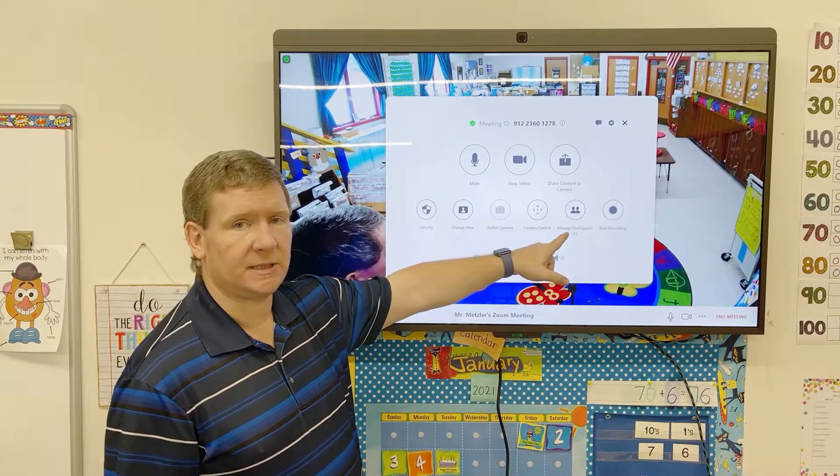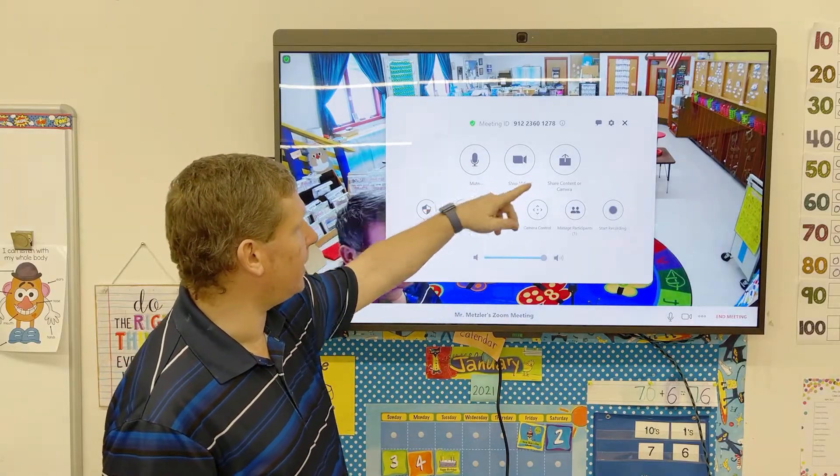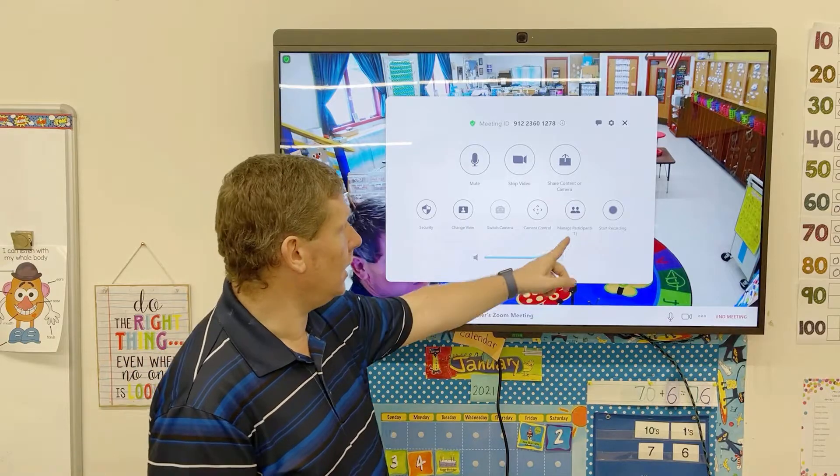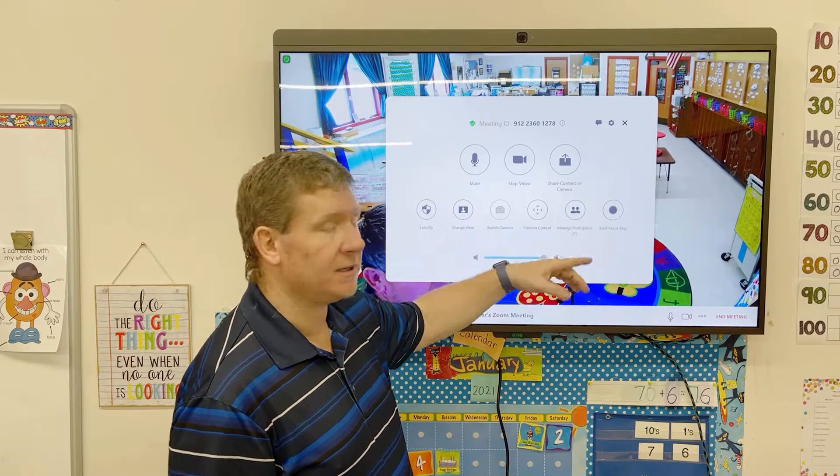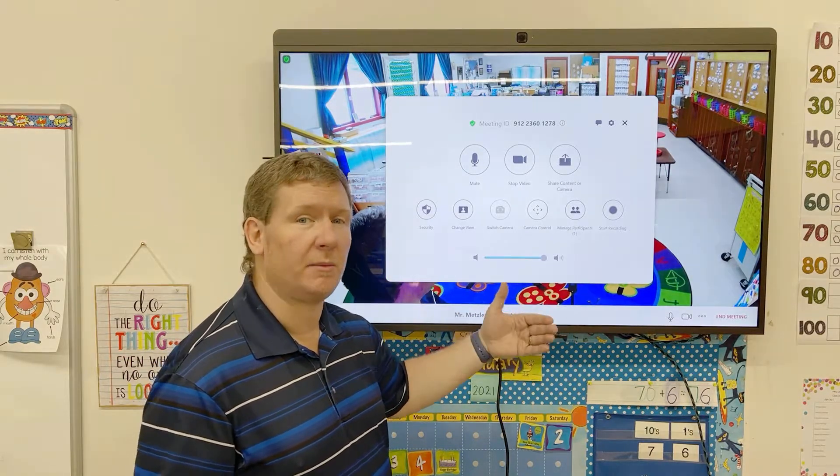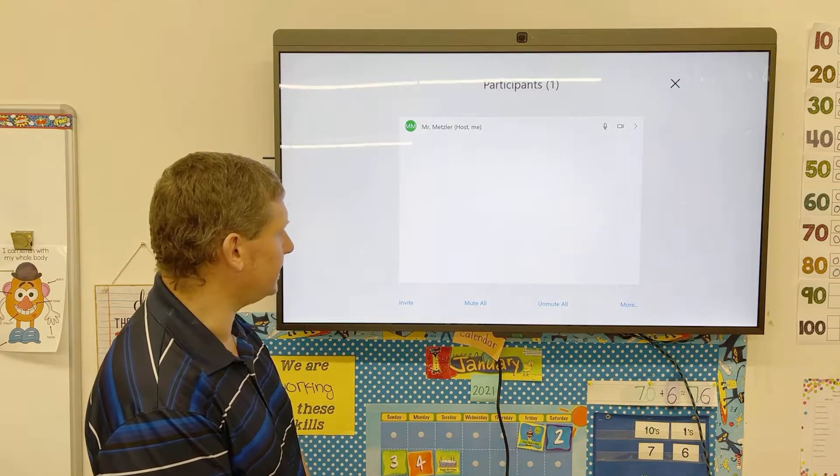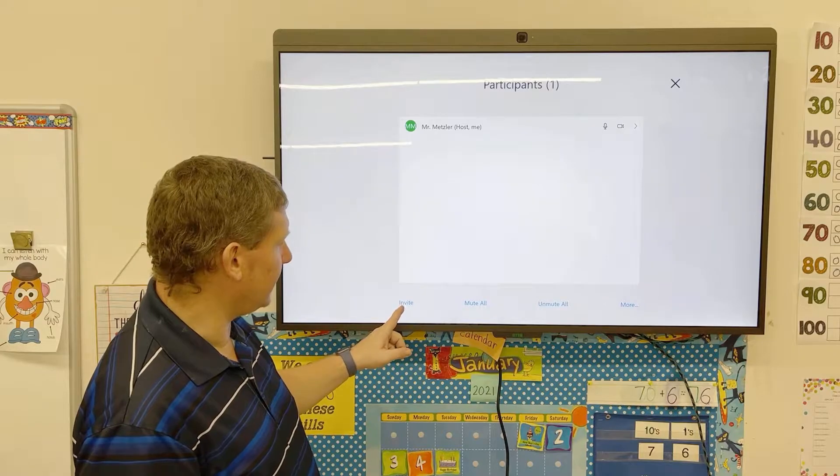So, you're going to see this Manage Participants tab. You're going to see a bunch of options and I'm going to have another video that goes through and shows you some of those. But I want to manage my participants because I just started a Zoom meeting, so I want to be able to get people in it.